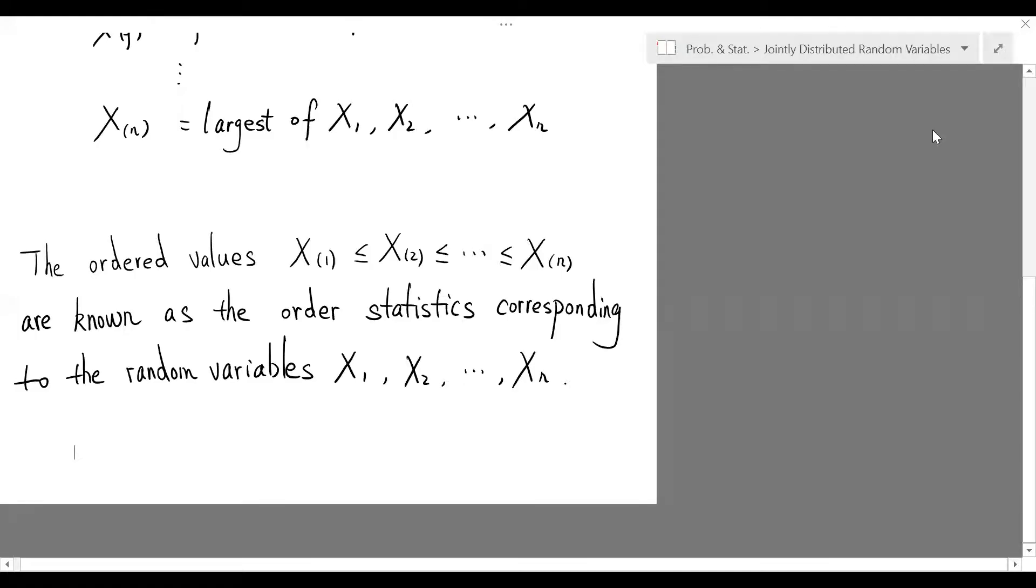In other words, the order statistics are just another set of random variables derived from the given random variables X sub n.